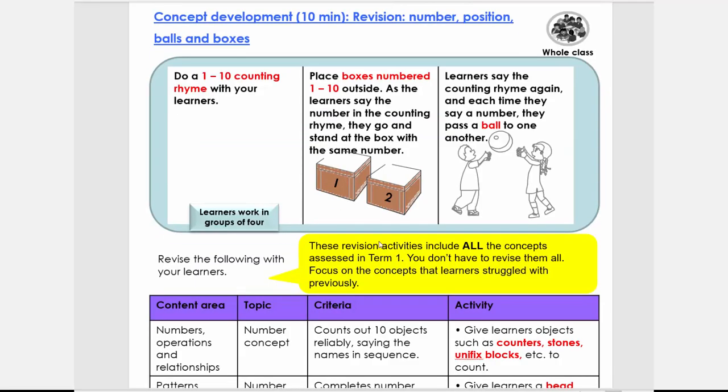Welcome back. So we're going to start with the concept of development for today. So firstly, you need to do a counting rhyme with them. You can go and Google, there are so many 1 to 10 counting rhymes available. Then what we're going to do is we're going to place boxes numbered 1 to 10 outside. If you don't have enough boxes, you can use any empty containers, anything that you have at home. It does not have to be the same.